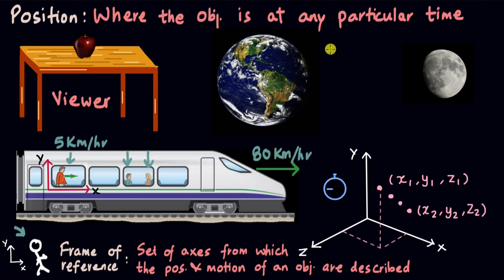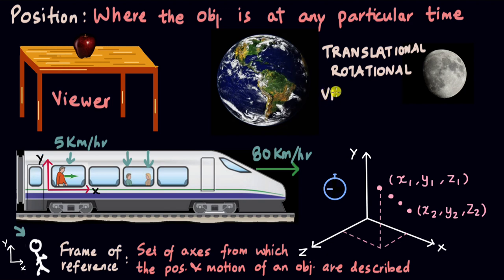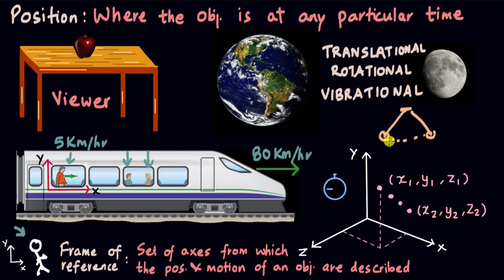In physics, we can categorize motion into three types: translational motion, rotational motion, and vibrational motion. A train moving in a straight line is an example of translational motion. Earth spinning on its axis is a case of rotational motion. For vibrational motion, we can think about pendulums — pendulums can swing from one position to a different position. The back and forth movement of a pendulum is vibrational motion.